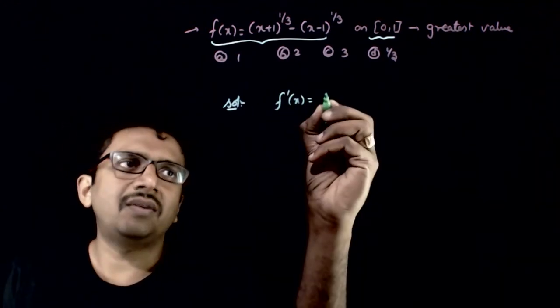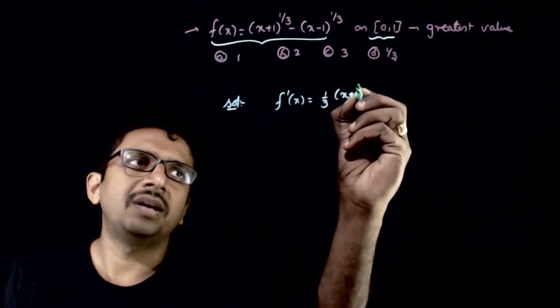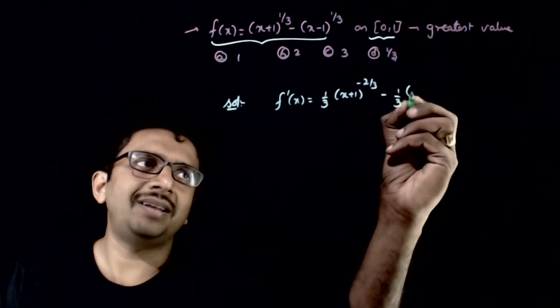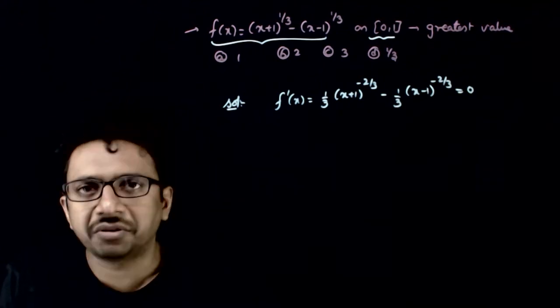f dash of x is equal to 1 by 3 into x plus 1 whole power minus 2 by 3 minus 1 by 3 x minus 1 whole power minus 2 by 3 is equal to 0.